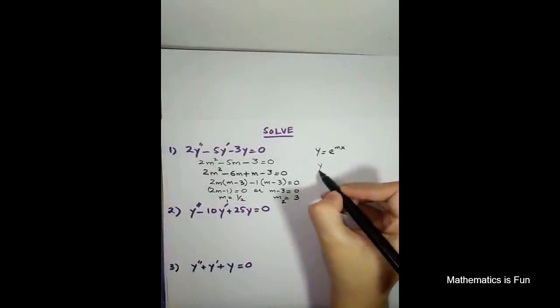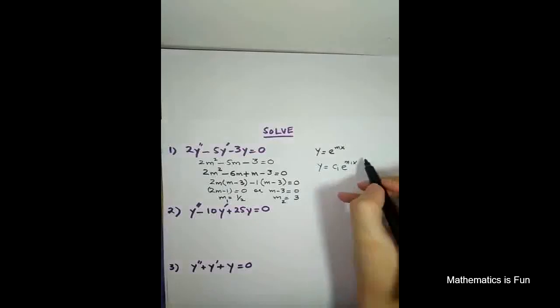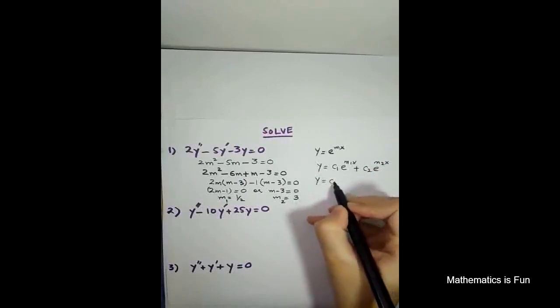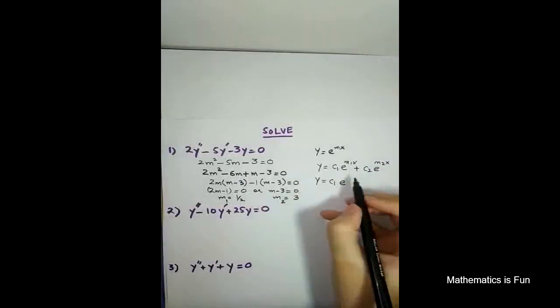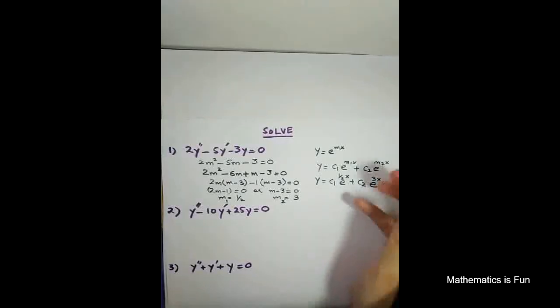So its solution is of the type c1 e to the power m1x plus c2 e to the power m2x. So you can replace it: c1 e to the power 1 by 2x plus c2 e to the power 3x. So that is the solution. Very easy.